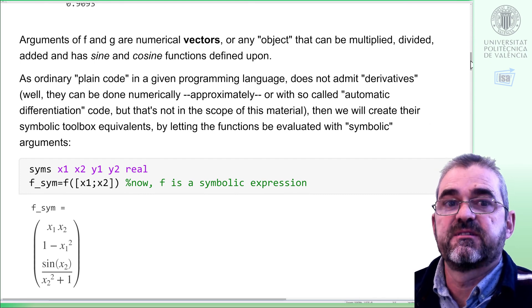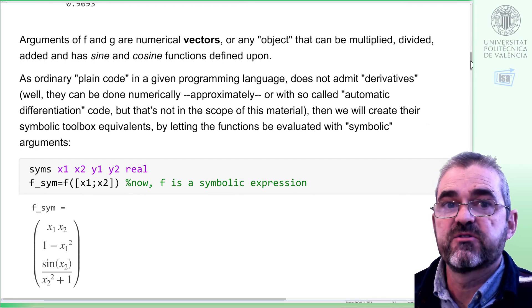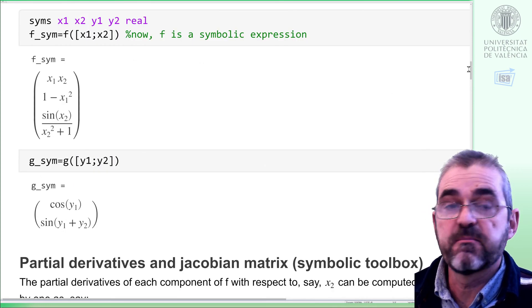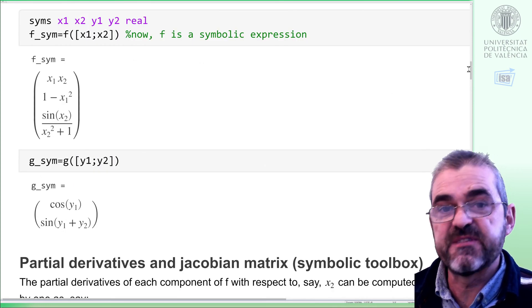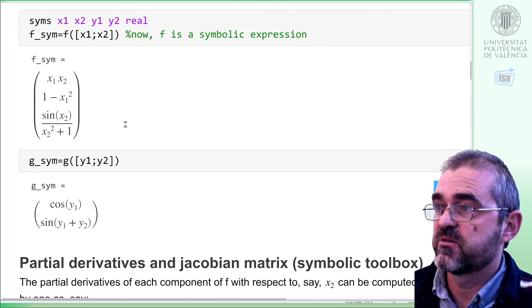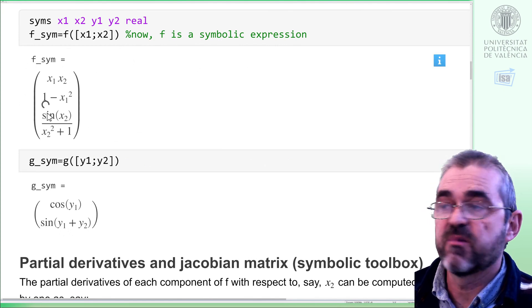So we will replace the numeric arguments of f and g by symbolic toolbox objects, x1, x2, y1, y2, so we have this symbolic f and symbolic g.